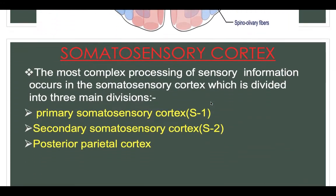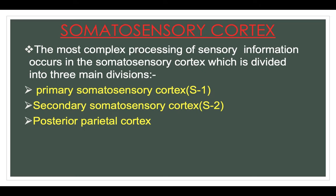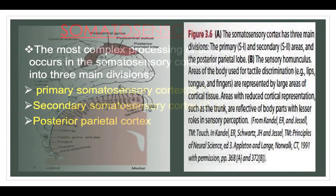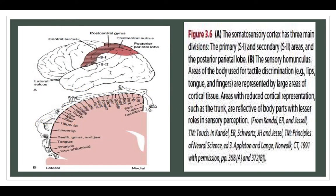The most complex processing of sensory information occurs in the somatosensory cortex, which is divided into three main divisions: the primary somatosensory cortex (S1), secondary somatosensory cortex (S2) and the posterior parietal lobe. The sensory homunculus shows its orientation from medial to lateral — lower limb, upper limb, face, teeth, tongue, gums, jaw and intra-abdominal organs.